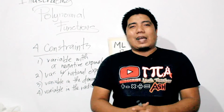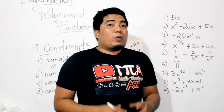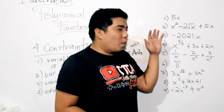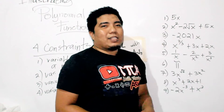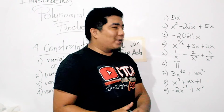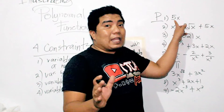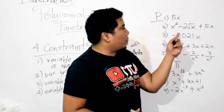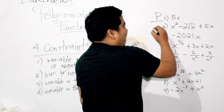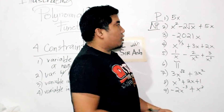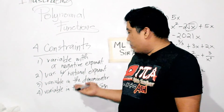Having said this, let us now try to illustrate polynomials. We have here 10 examples, and what we need to do is describe whether the given expressions are polynomials or not. First is 5x — that is a polynomial because it has a constant and a variable. Number two, x squared minus 2 square root of x plus 5x — that is not a polynomial because the variable is inside the radical sign.